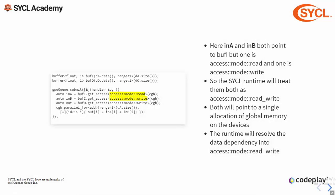Here we have an example of accessor resolution. We have two accessors, in A and in B, which both access the same buffer buff_i. One is read and one is write. Both will point to a single allocation of global memory, but the command group will resolve these two accessors into a single dependency of read-write.